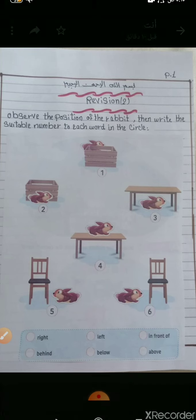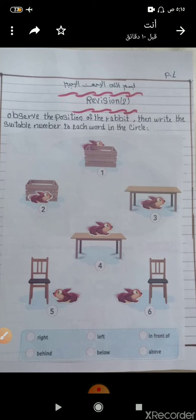Picture number six, the rabbit is at the left. Excellent, left of the chair. So here at the left, we write number six.